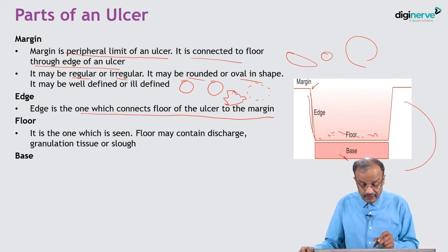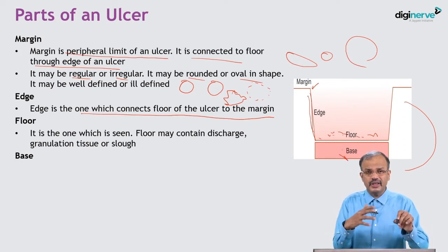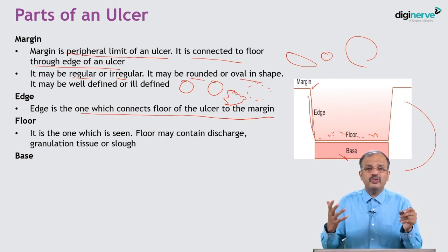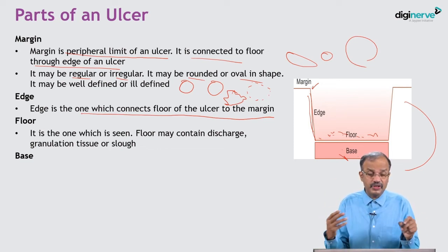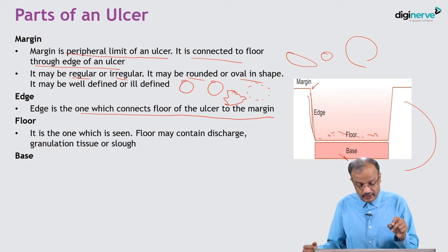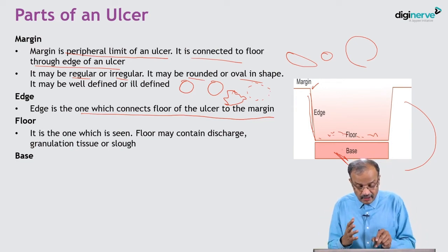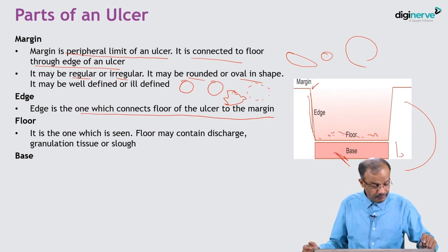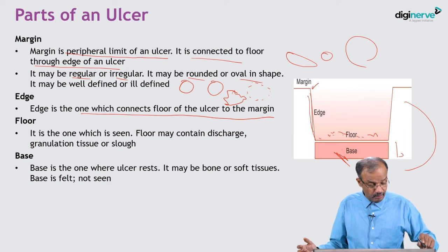Next is the base - that is where the ulcer lies, in a deeper plane. It may rest on bone, muscle, or fascia. The base is not seen; it is deep to the floor. The ulcer rests on the base - it is clinically felt but is actually the deeper plane. Base is felt, not seen - remember that.